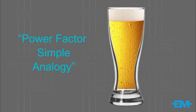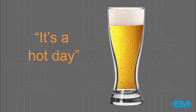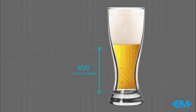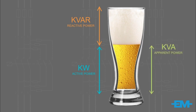Here is a simple analogy from everyday life to help you understand power factor. It is a hot day — here is a glass of beer. The thirst-quenching portion of the beer is represented by KW. The beer comes with some foam, and the foam doesn't quench your thirst. The foam is represented by KVAR.